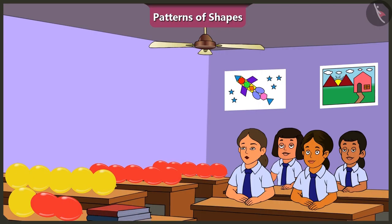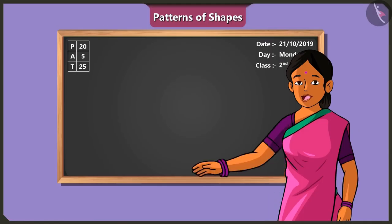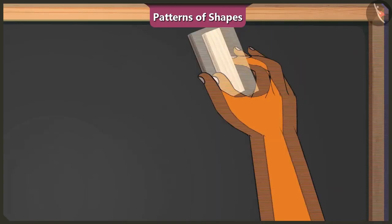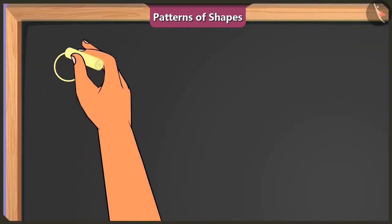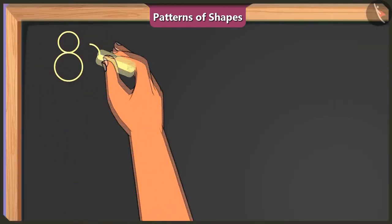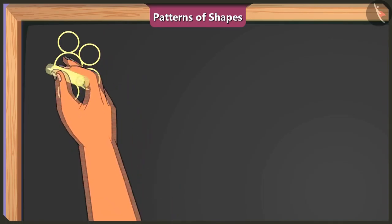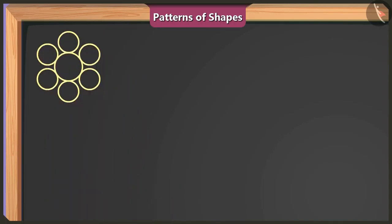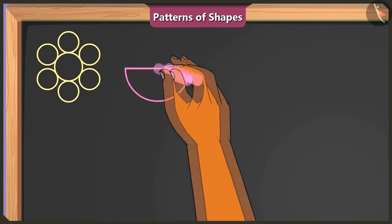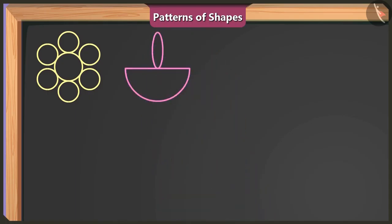What do we do next? We need to decorate this board. Okay, ma'am. On one corner of the board, we can use big and small circle shapes to make a flower. Next to this flower, I can draw a dhiya using a semi-circle and an oval shape in this manner.